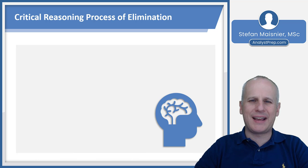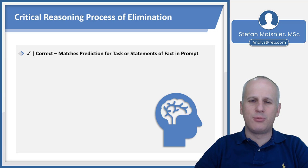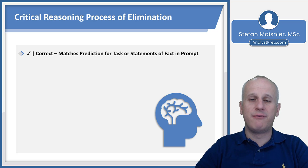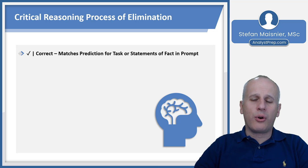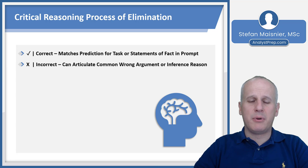The most important aspect of critical reasoning is going to be the process of elimination. If you've seen the reading comprehension lesson, this will be relatively familiar to you. A check mark next to an answer choice indicates that it is correct — meaning it matches the prediction you came up with for the argument task, such as strengthen, weaken, or identify a flaw, or it simply matches the statements of fact in the prompt if it's an inference task.